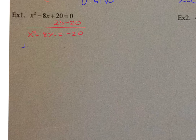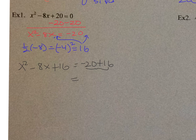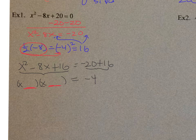We take half of b, which is half of −8 = −4, then square it to get 16. Add 16 to both sides: x² − 8x + 16 = −20 + 16, which gives −4 on the right. Factor the left side — the number inside the parentheses is always the half-of-b value, which was −4, so we get (x − 4)² = −4.